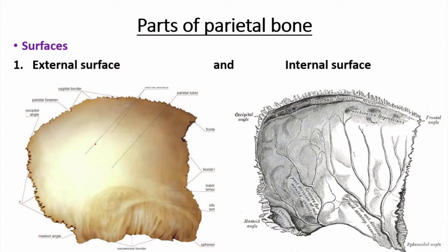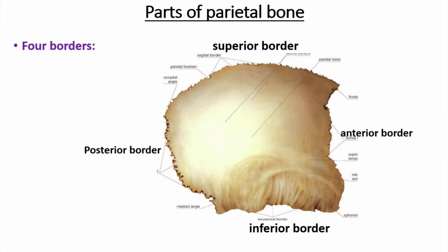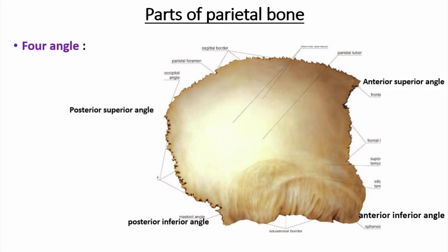The parts of the parietal bone: this is the external surface and this is the internal surface. The external surface is smoother than the internal surface. The internal surface is irregular due to the presence of sulci and gyri of the cerebrum and grooves for middle meningeal vessels and venous sinuses. The four borders present in the parietal bone are: the longest — the superior border, the more straight anterior border, the irregular inferior border, and the straight posterior border. The four angles are: anterior superior, anterior inferior, posterior superior, and posterior inferior. The anterior inferior angle is the most acute.